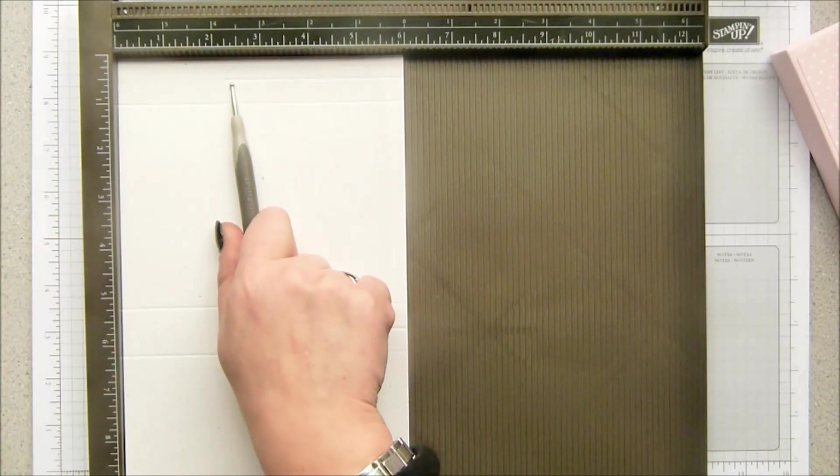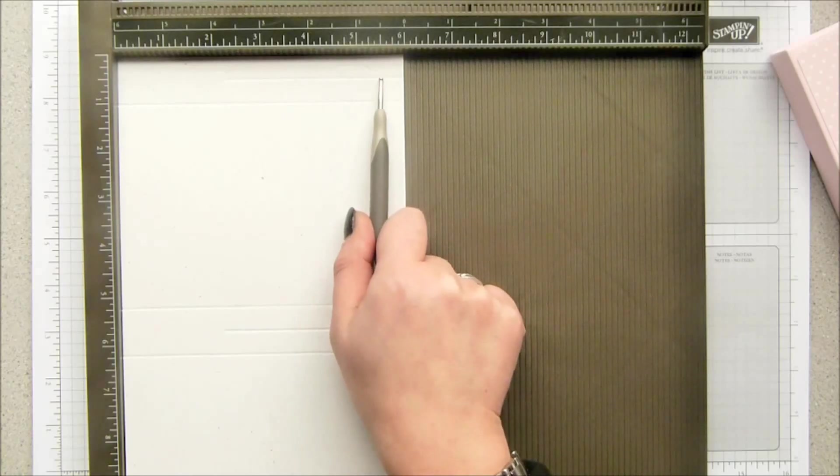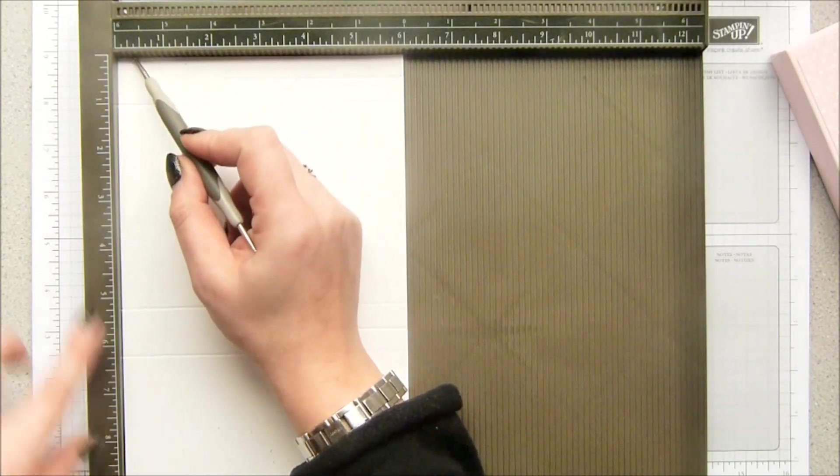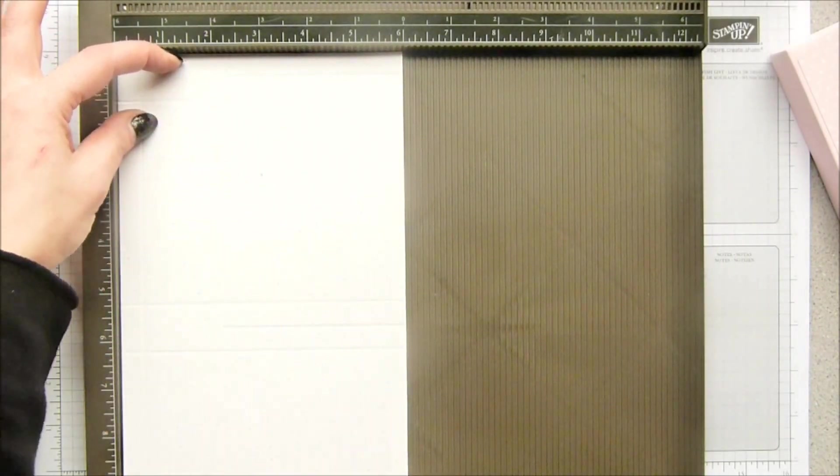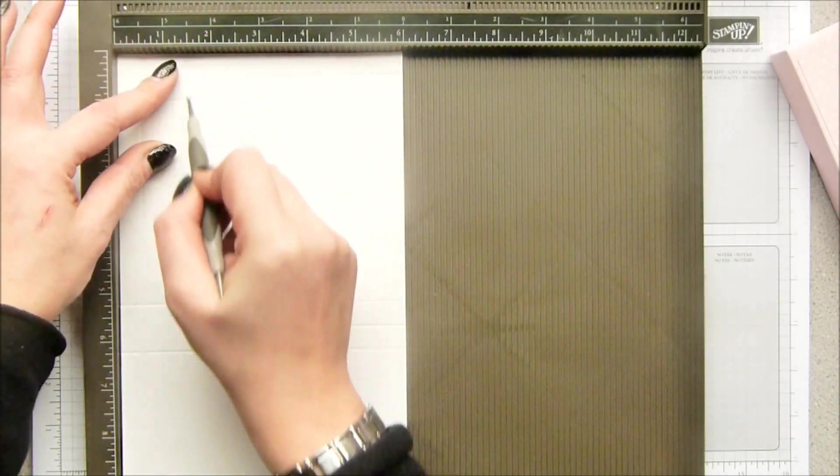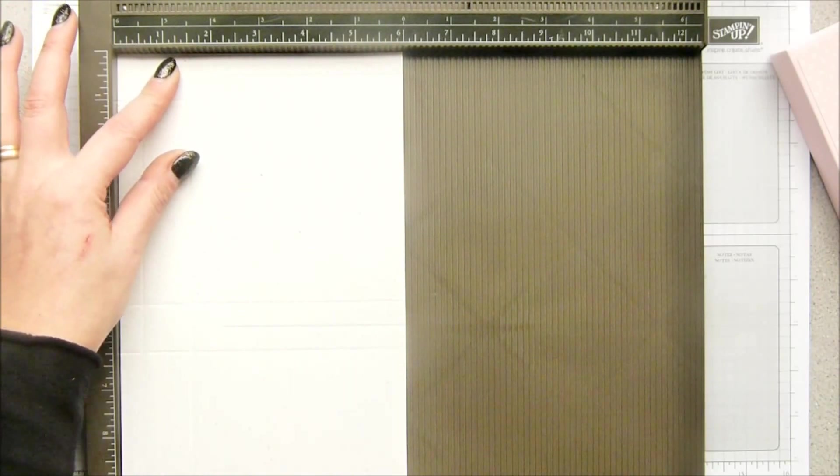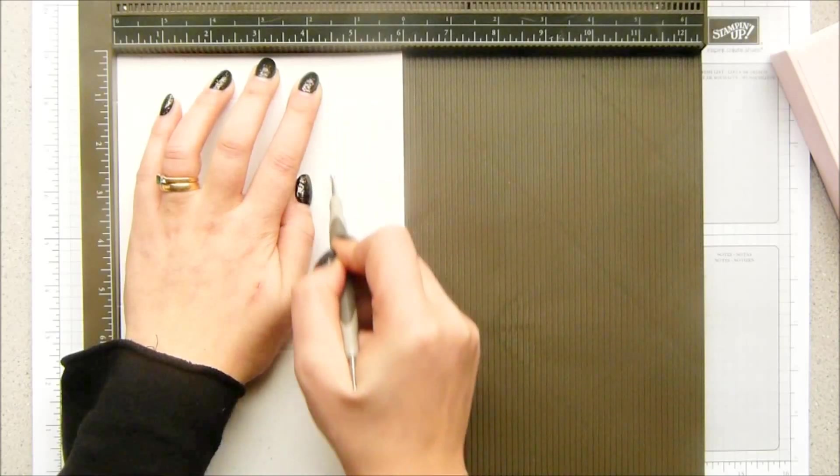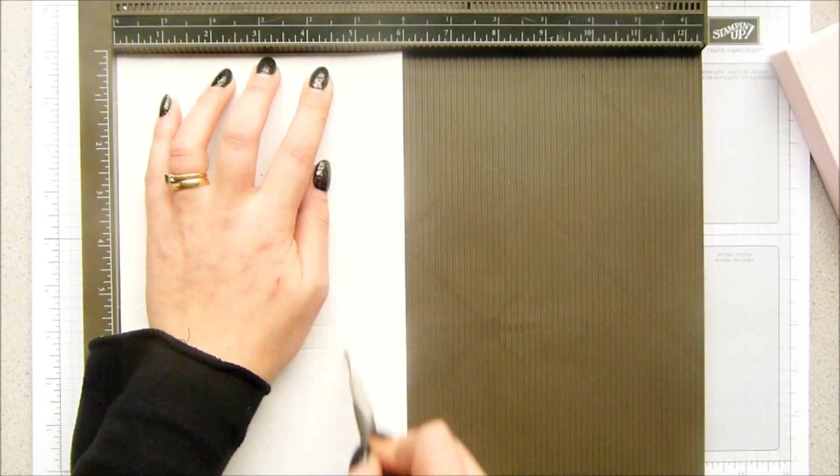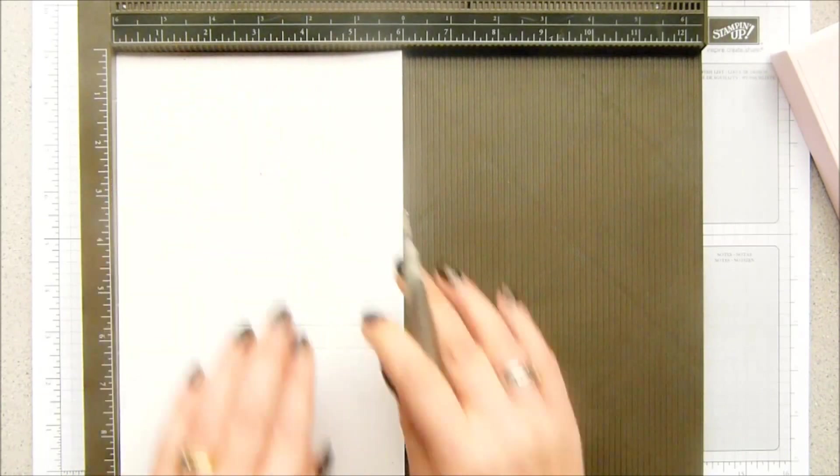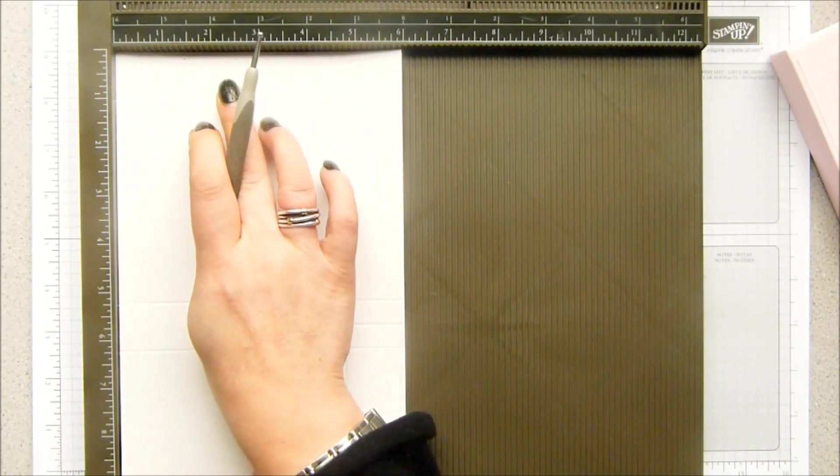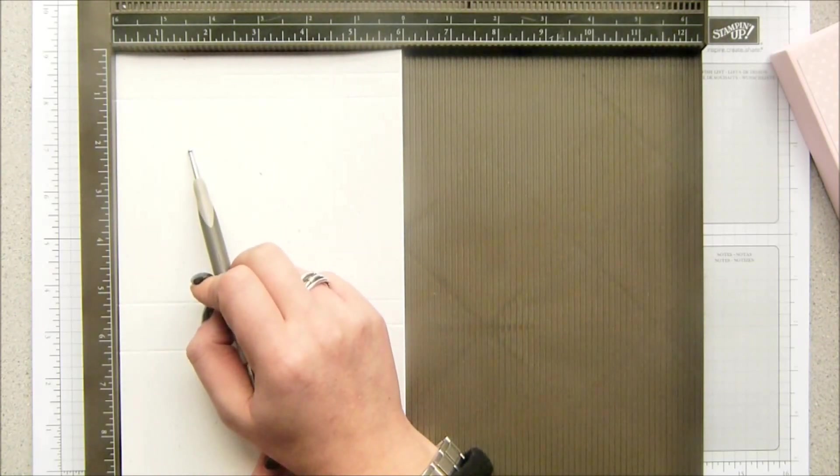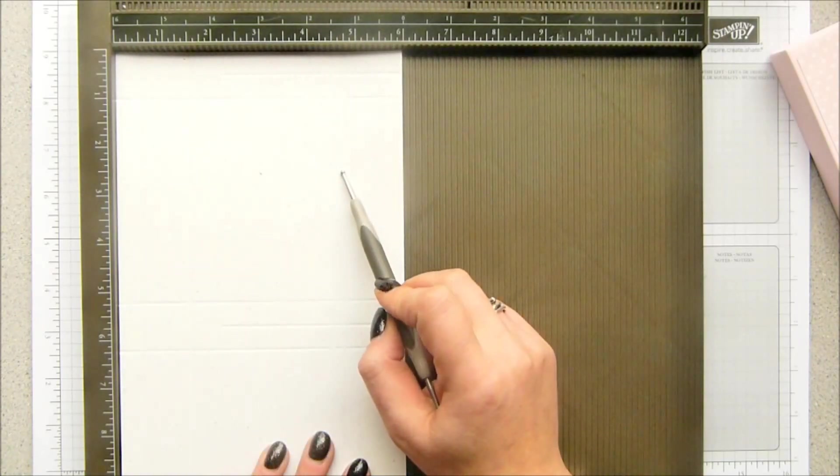Then you turn it round so that you've got this part on the right hand side, and you score at half an inch, one and a half inches, four and a half inches, and four and three quarters of an inch. In metric, keeping these half score lines to the right hand side, you score at one centimeter, three and a half, eleven, and eleven and a half.